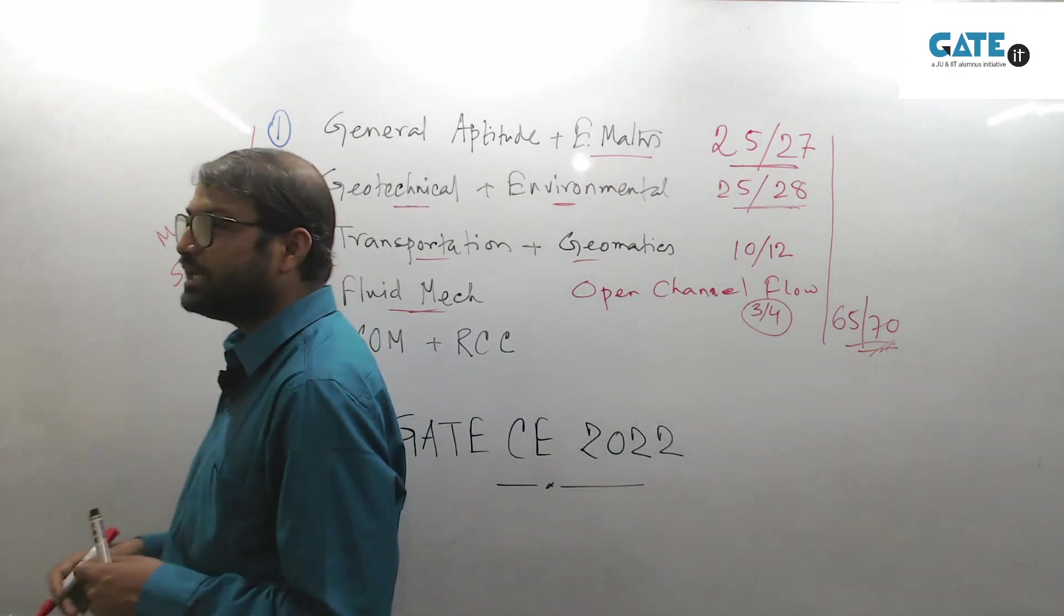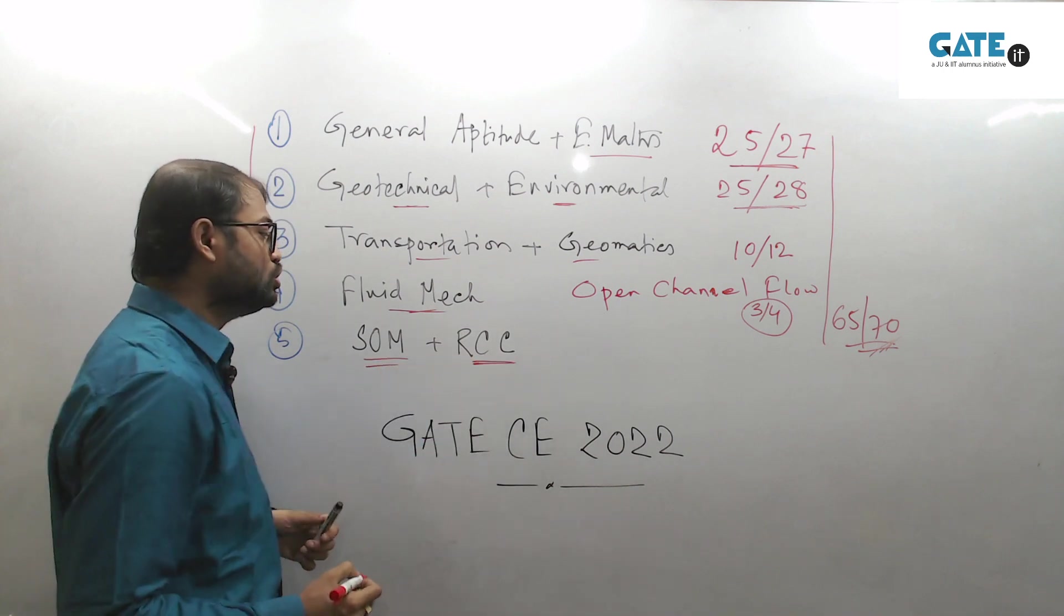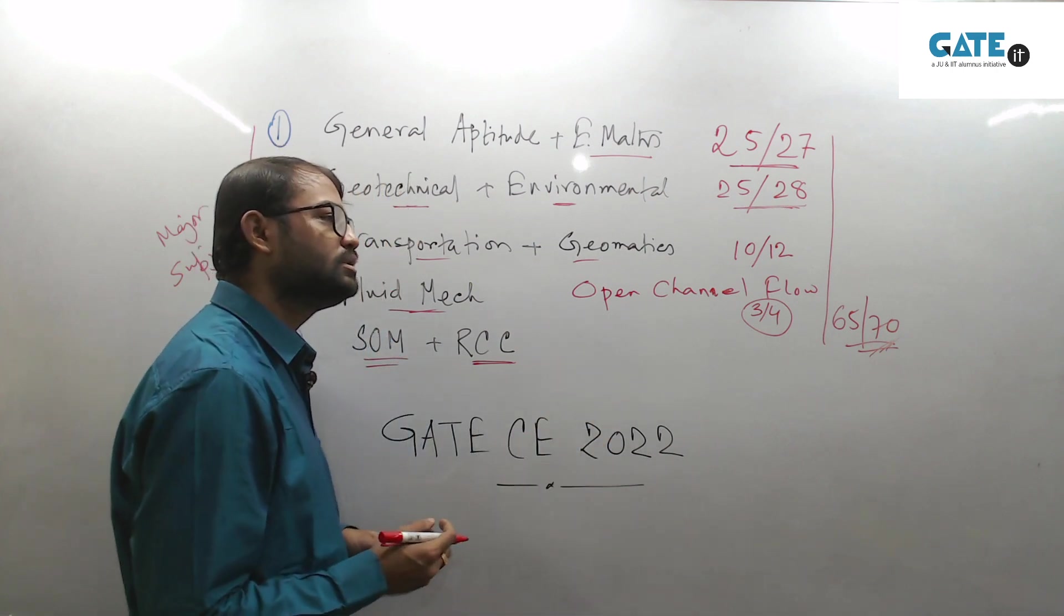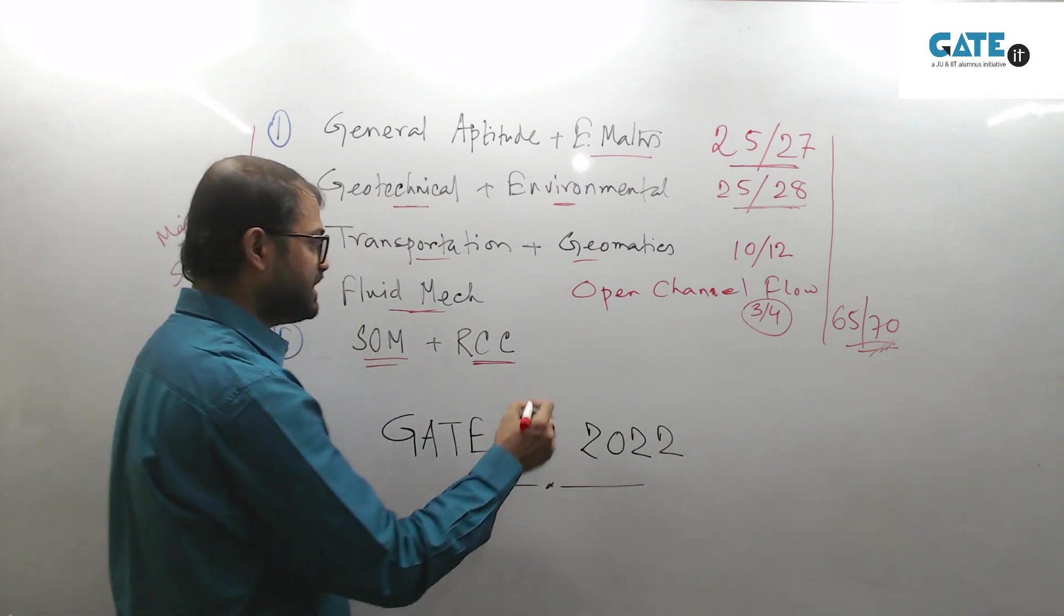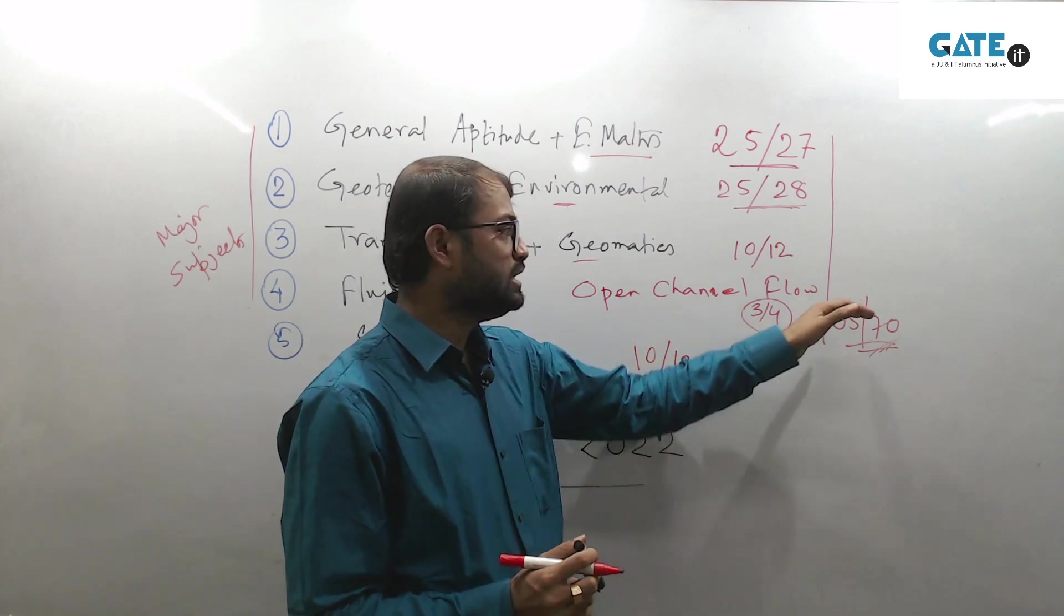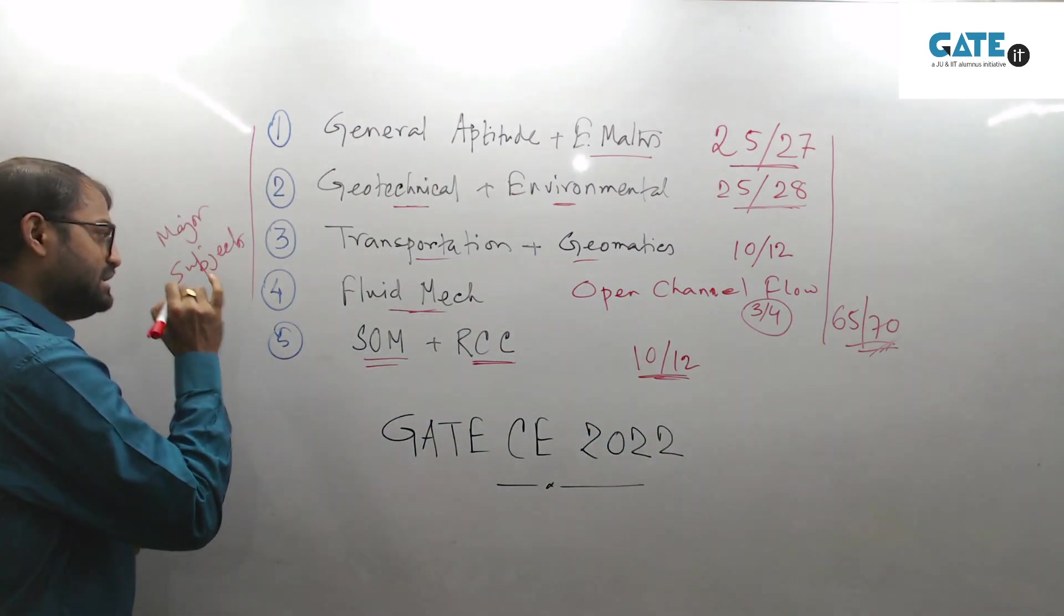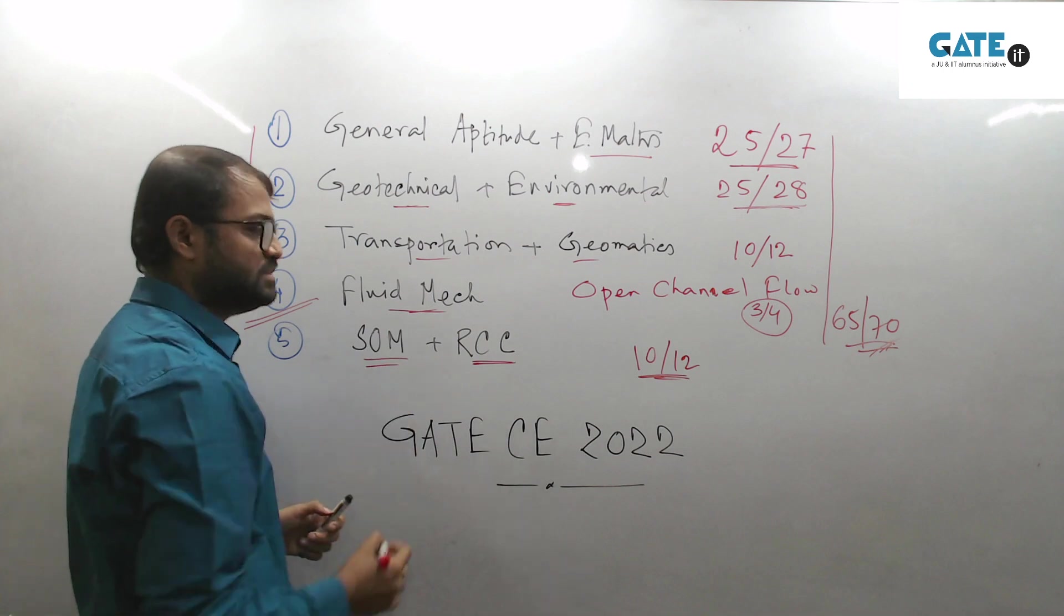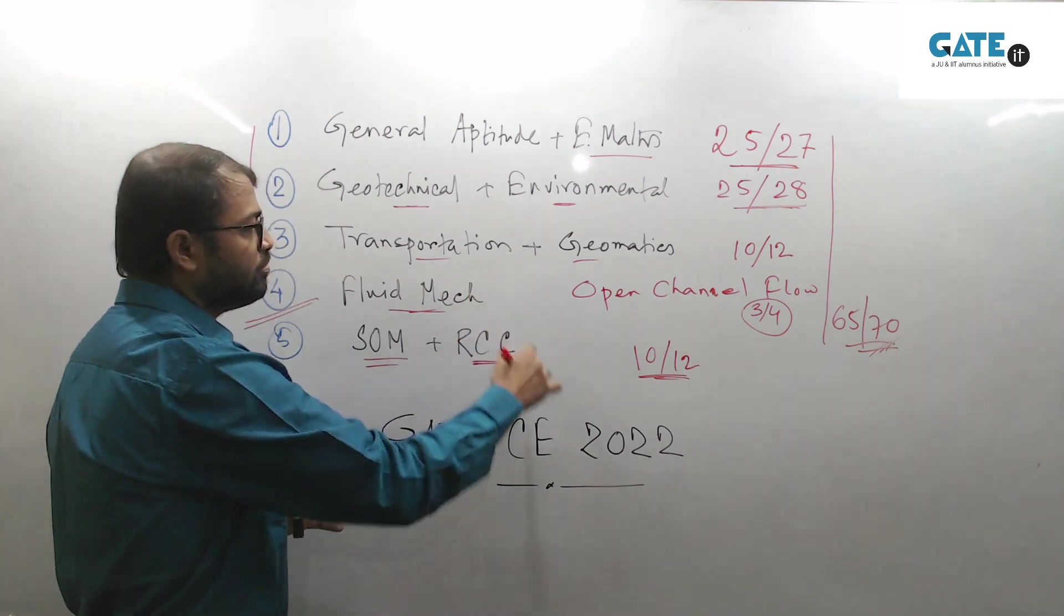Now if you are eager to increase your marks from here onward, you have another two options: one is strength of material and RCC. You have hydrology also - hydrology and irrigation is also there. From here also you can expect some 4 to 5 marks altogether. Strength of material and RCC altogether you can expect somehow some 10 to 12 marks. So from here onward you can increase your number, but my strong suggestion is unless you are finally reaching at this point, if you are comfortable with all these subjects, all the concepts, all the previous year questions, you should not go beyond that.